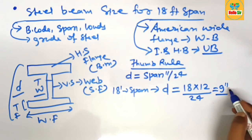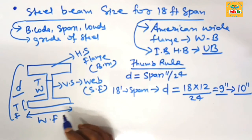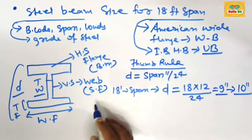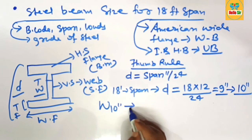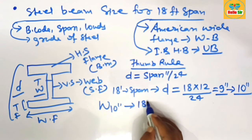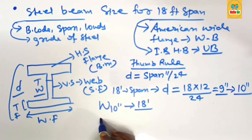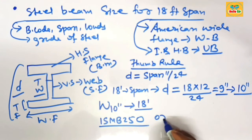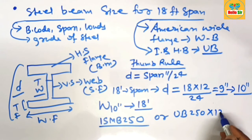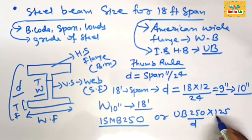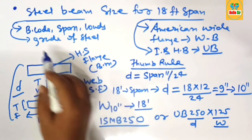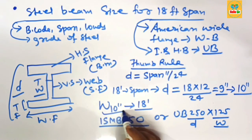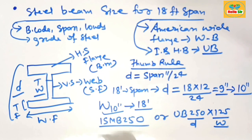Since a 9-inch depth beam section is not available, it comes in 10 inches as American Wide Flange beam. So for an 18-foot span, you need American Wide Flange beam W10 inch size. As per other practices, you need ISMB 250, or if you use a universal beam, you need UB 250 x 125, where 250 is the depth section and 125 is the width of flange. In summary, a 10-inch depth steel beam is required for an 18-foot span.